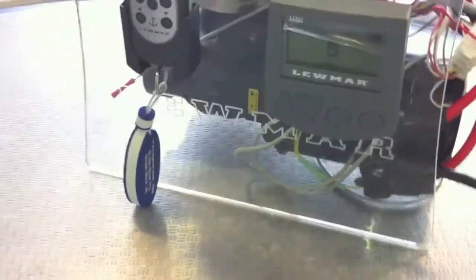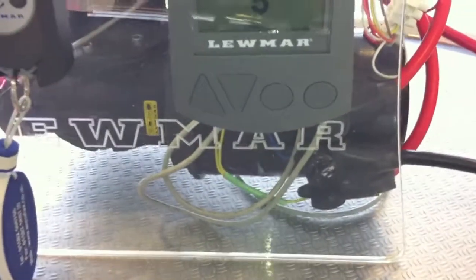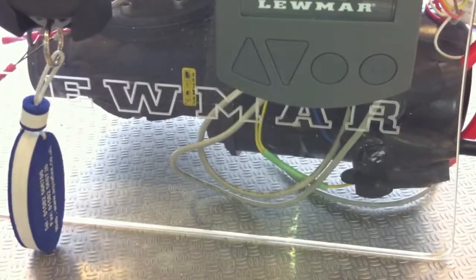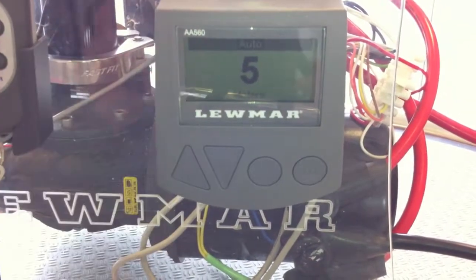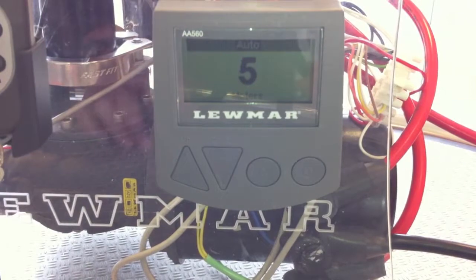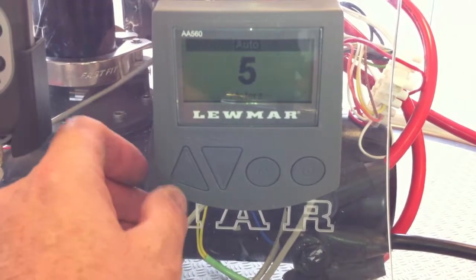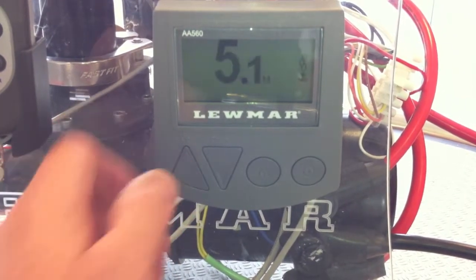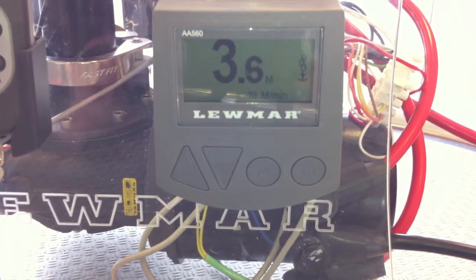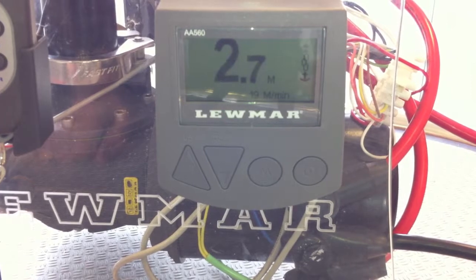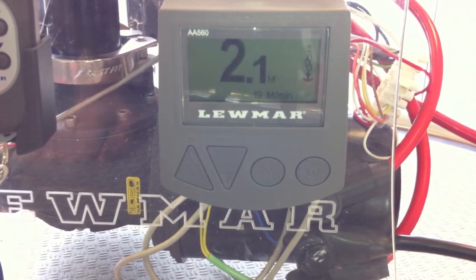Coming round to the side, I'll demonstrate the AA560 chain counter which we supply. This can be preset for the depth of chain you require and also in the other direction can be set with an offset to stop the anchor, in this case at one and a half metres before it hits the stem head.